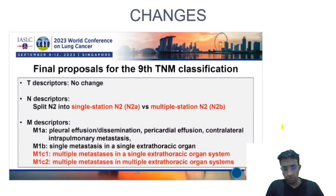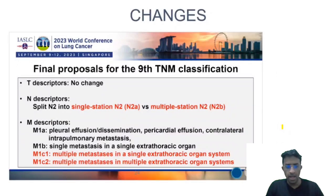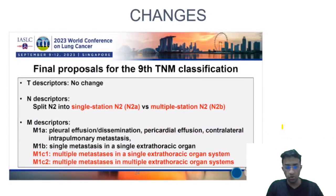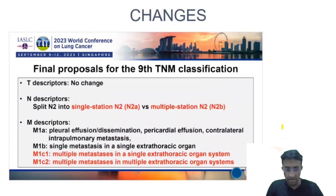The other changes were brought in the M-staging. M1A and M1B remained the same. M1C1 is multiple metastasis in a single extrathoracic organ system, and M1C2 is multiple metastasis in multiple extrathoracic organ systems. In the 8th edition, it was just M1C, regardless of whether it involved single or multiple extrathoracic organ systems.